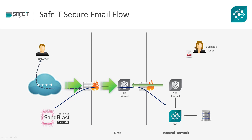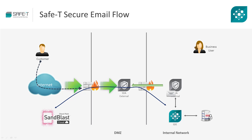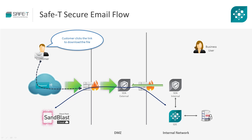Focusing on a specific secure email scenario, let's understand the flow of the combined solution. A business user sends a secure email to a recipient. The secure email includes an attachment and a safe reply link. The secure email arrives to SafetyHDS, which secures the attachment and sends the email with a link to the attachment and safe reply to the recipient.